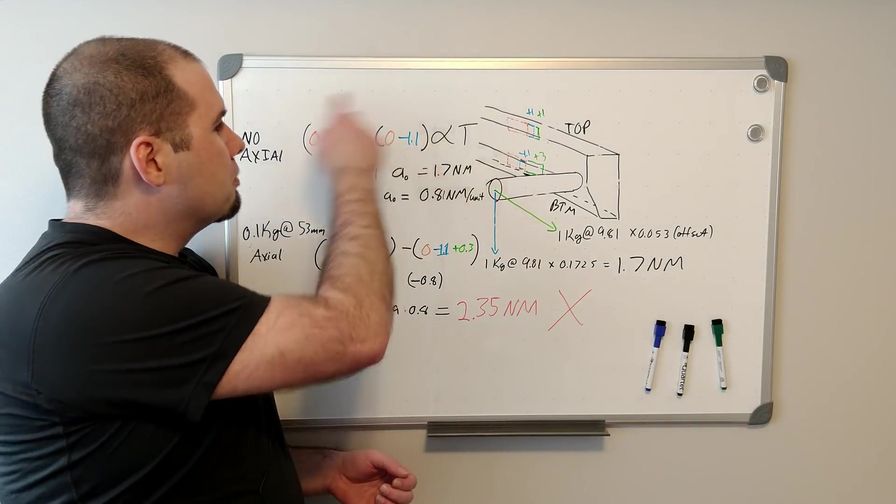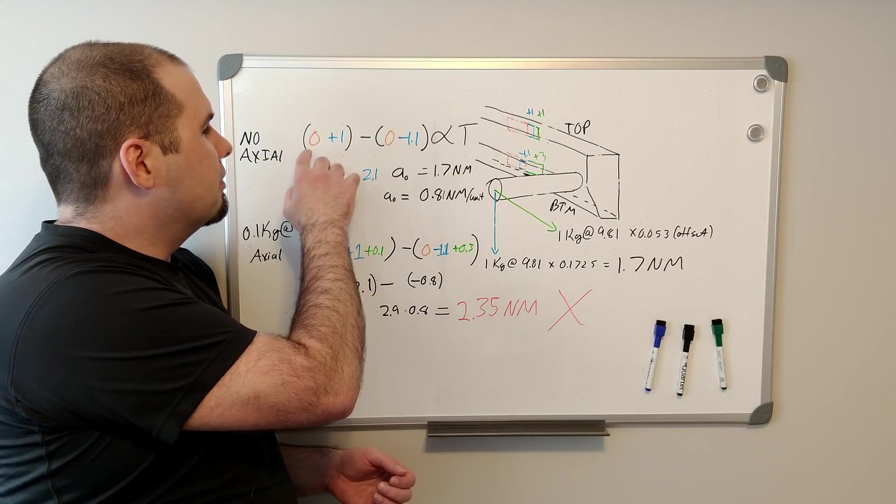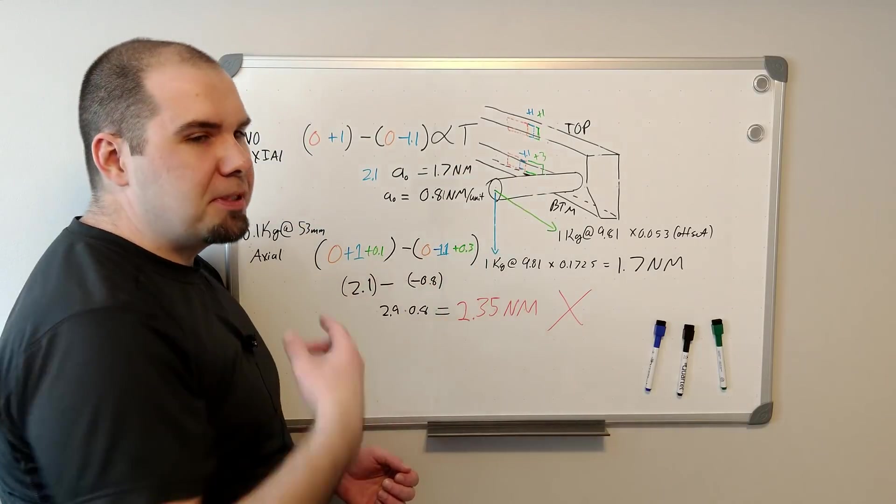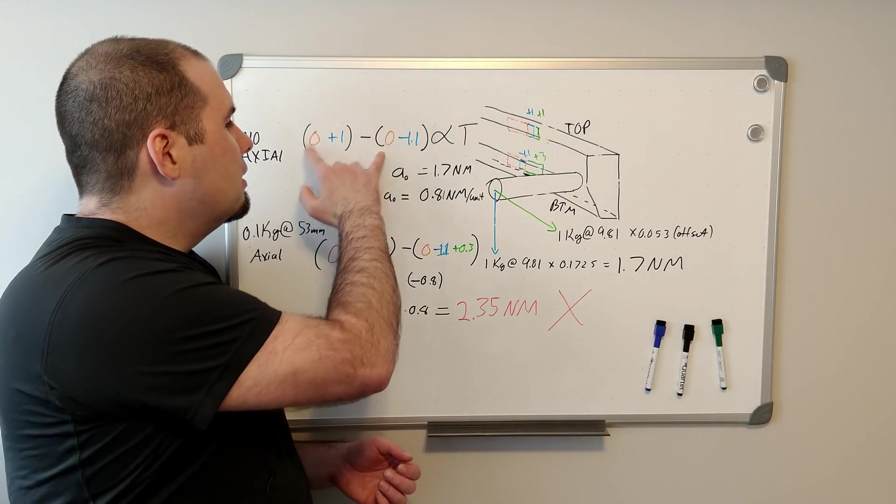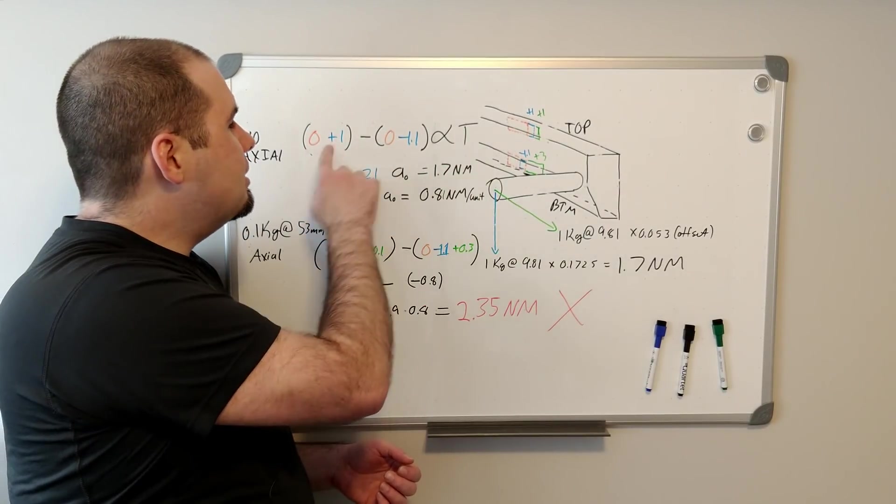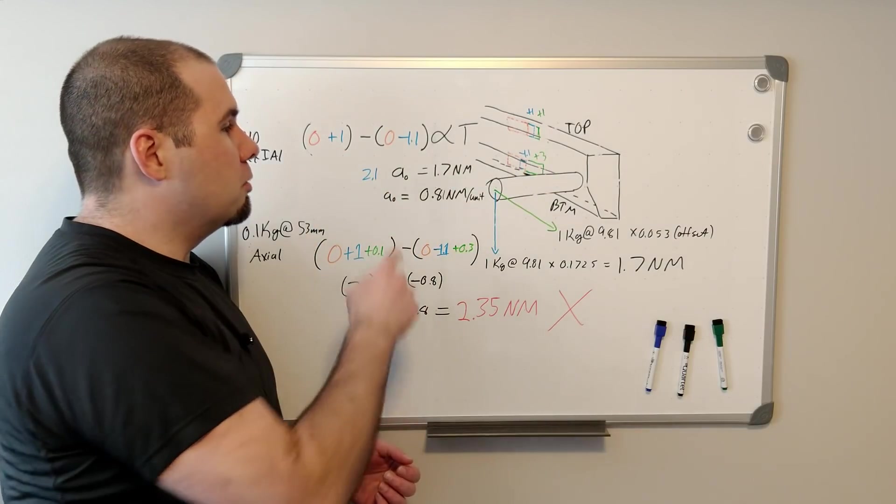So, in the Wheatstone bridge, we might get this type of arrangement. We simplified it here for only two strain gauges, but there are zeros. The change is plus 1 and minus 1.1.